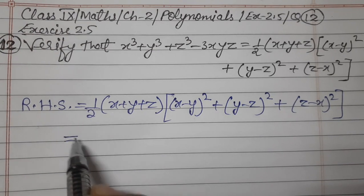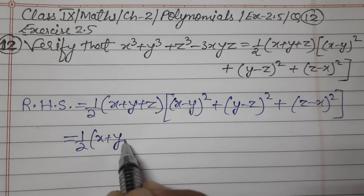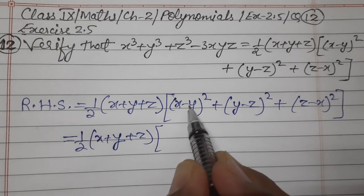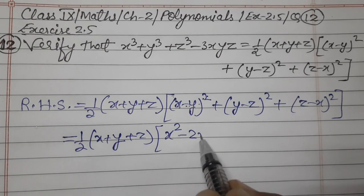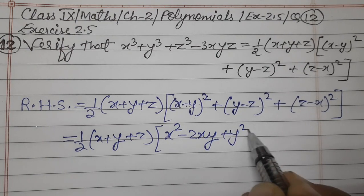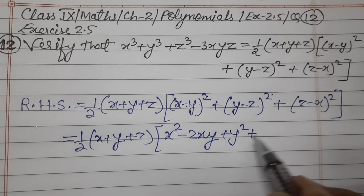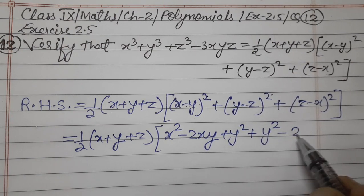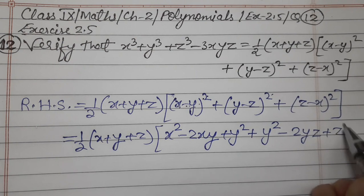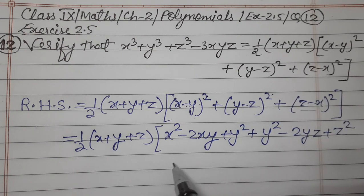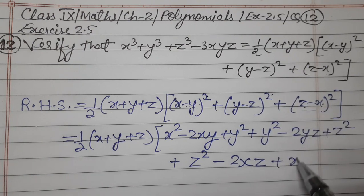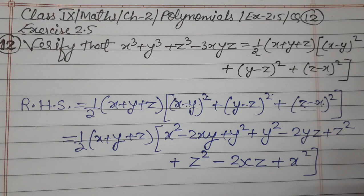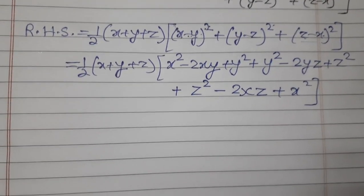Open it — half times the bracket. Using the identity (a - b)² = a² - 2ab + b²: expand (x - y)² as x² - 2xy + y², then (y - z)² as y² - 2yz + z², and (z - x)² as z² - 2xz + x². We have now opened all the identities.